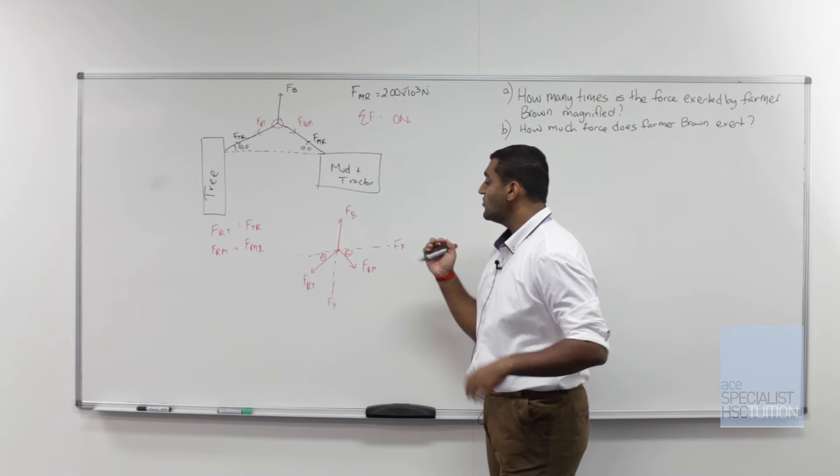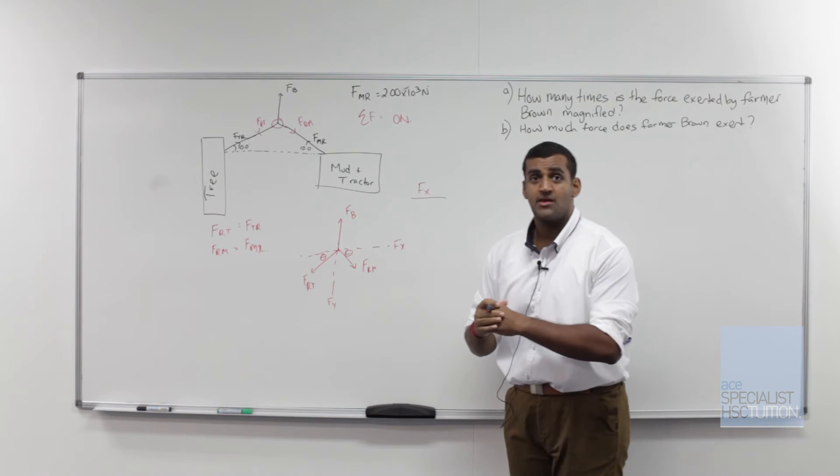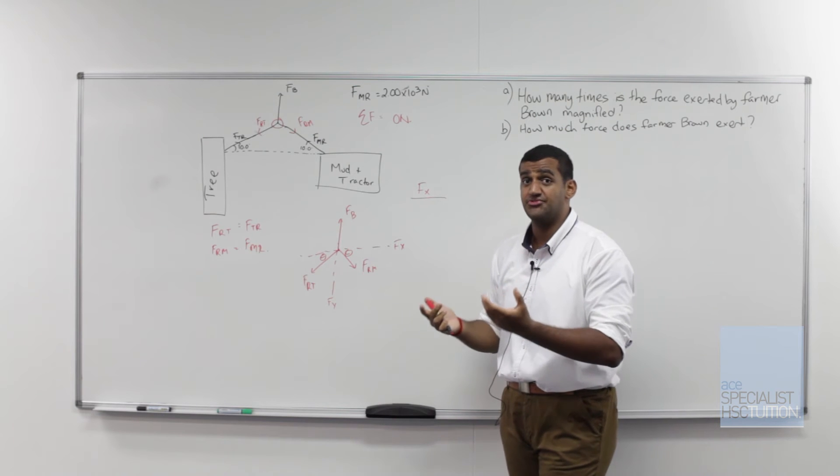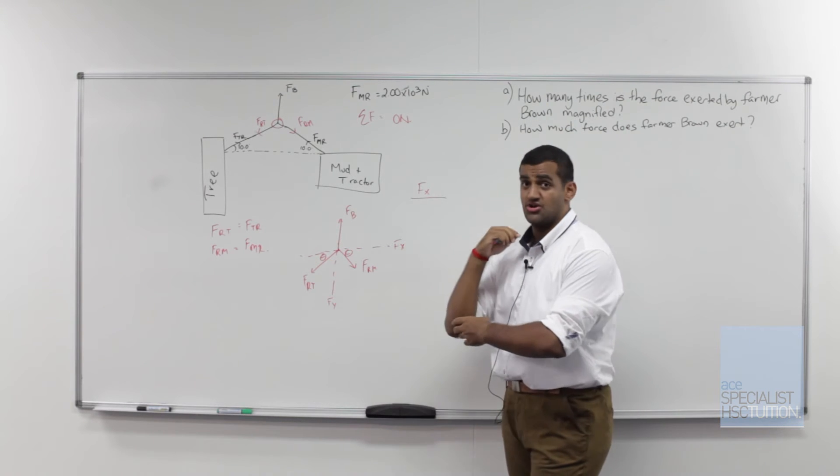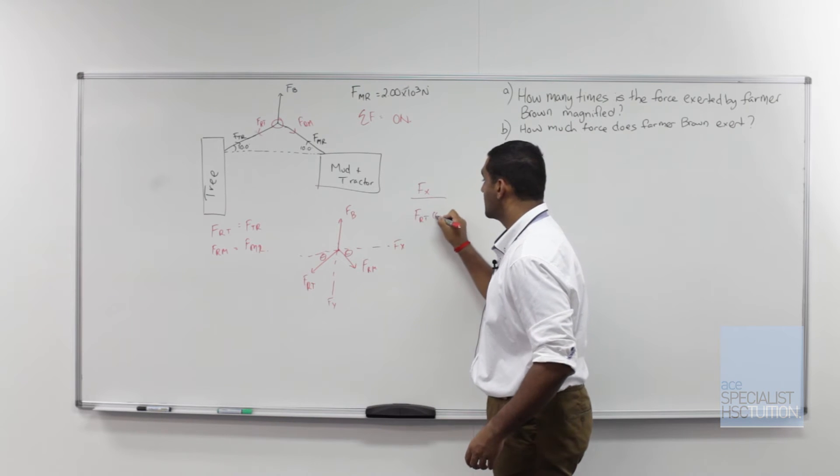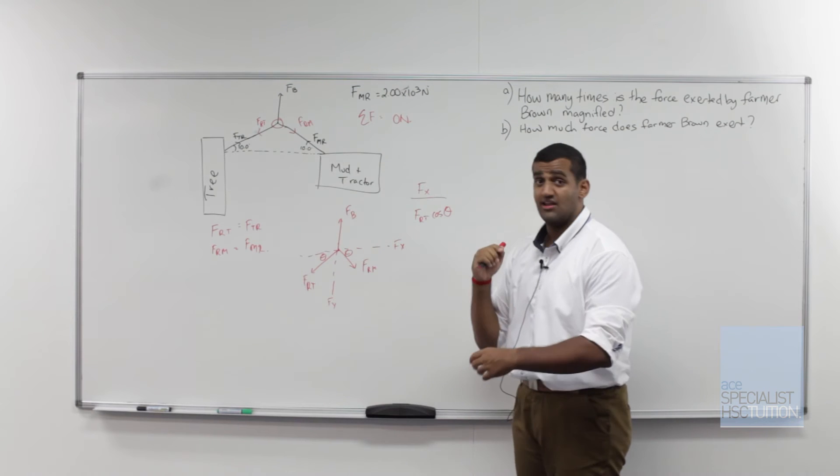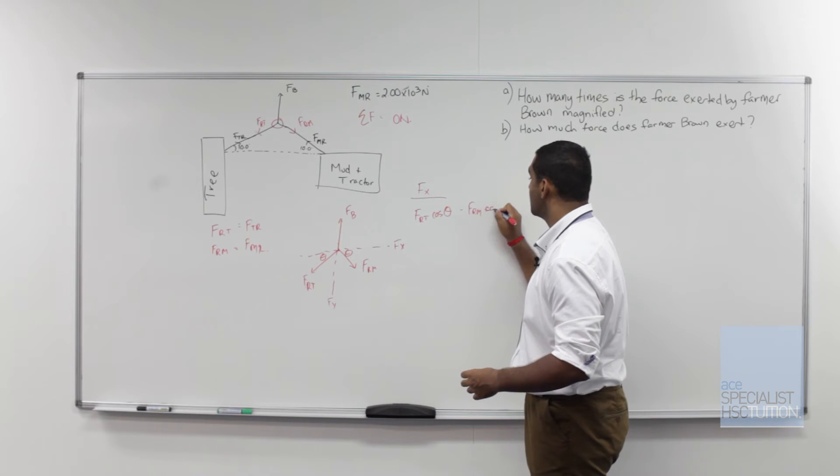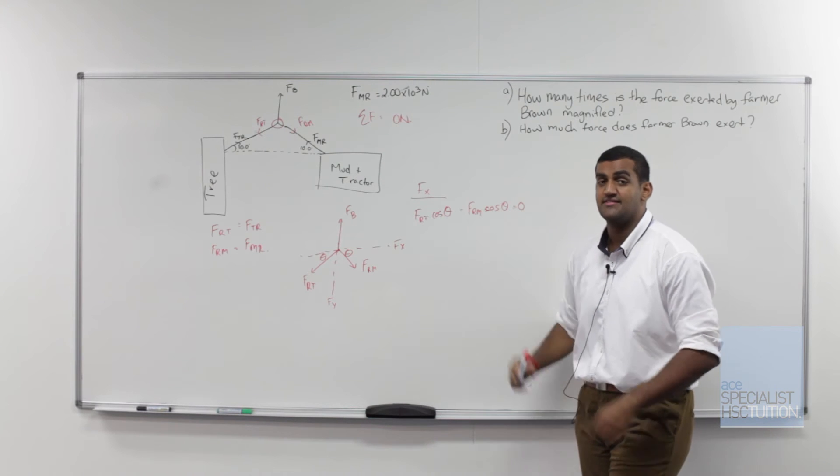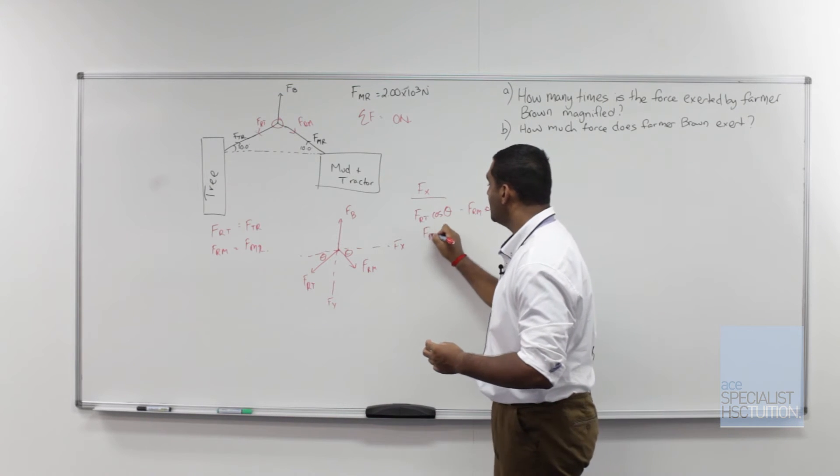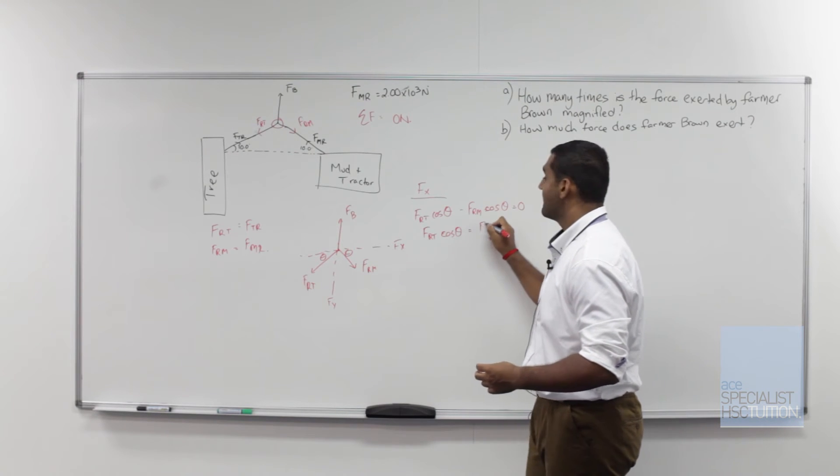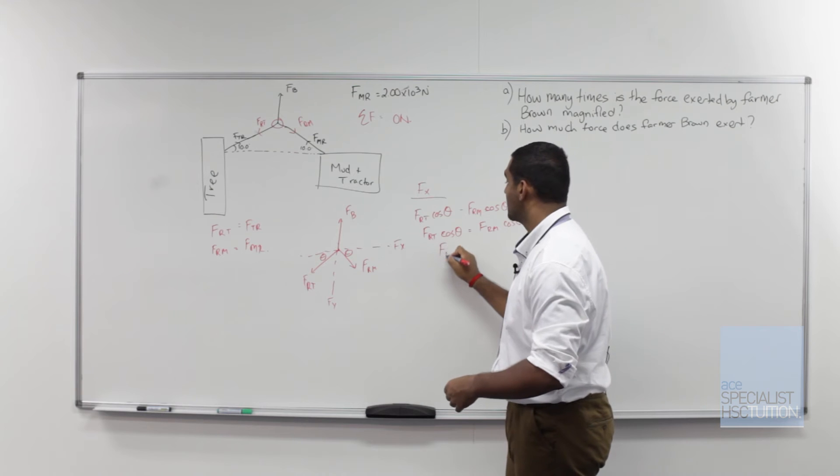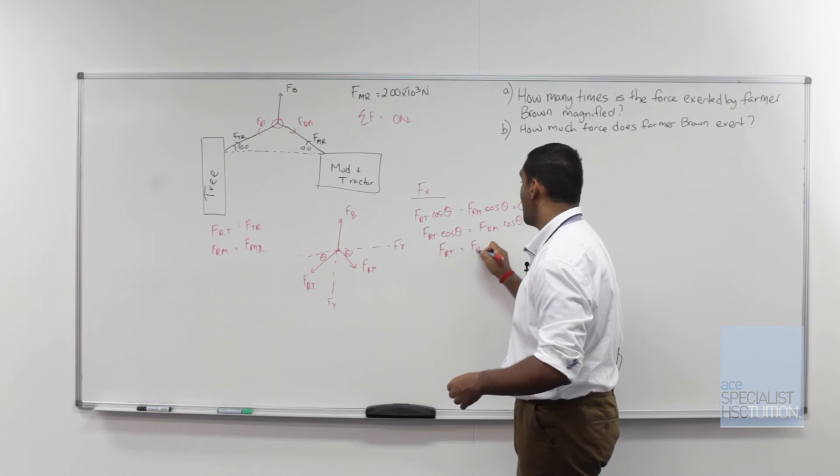Now if we look at the forces acting in the x-direction, so FX, these forces will always be equal to zero. Why? Because the sum of all the forces is equal to zero. So the complete net force is equal to zero. Now what are the forces that are acting in this horizontal direction? We've got FRT cos theta which is acting towards the left and we've also got FRM cos theta which is acting towards the right. Since they're in different directions we'll chuck the minus sign between and we know that this is equal to zero. That means that FRT cos theta actually equals FRM cos theta.